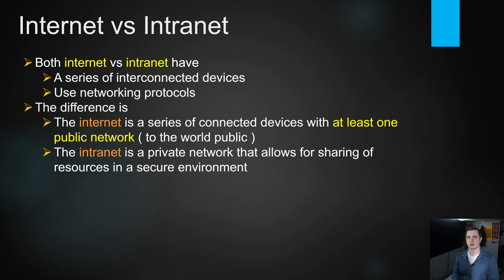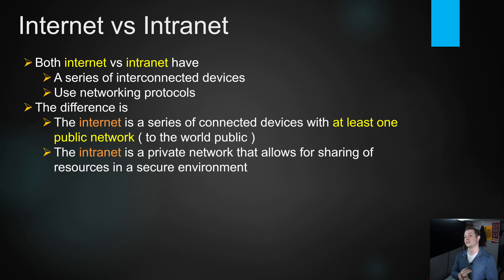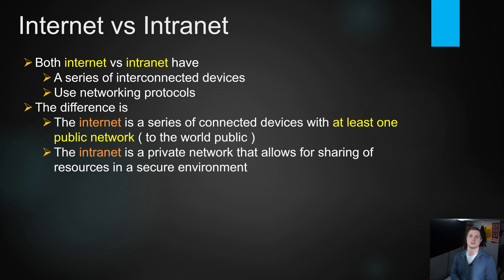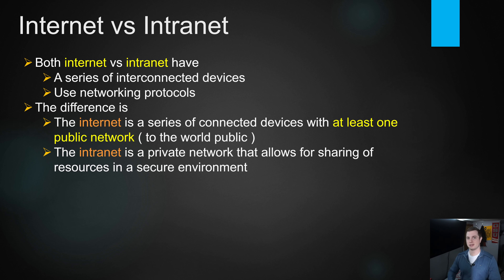The internet has at least one public network exposed to the public that is not secured — the worldwide web. The intranet allows for sharing of devices in a secure environment that is not exposed to the public network. That allows us to do a variety of things in terms of sharing and resource allocation, making things more efficient instead of having all the hardware right there on your desk. So to summarize: internet is a public network, intranet is a private, local network.